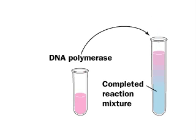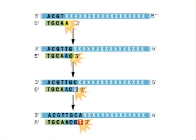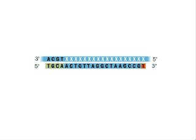As the new DNA strand grows, a random choice determines each step. Will a DNTP bind, letting the strand grow, or will a DDNTP bind, stopping growth and marking the strand with a color?